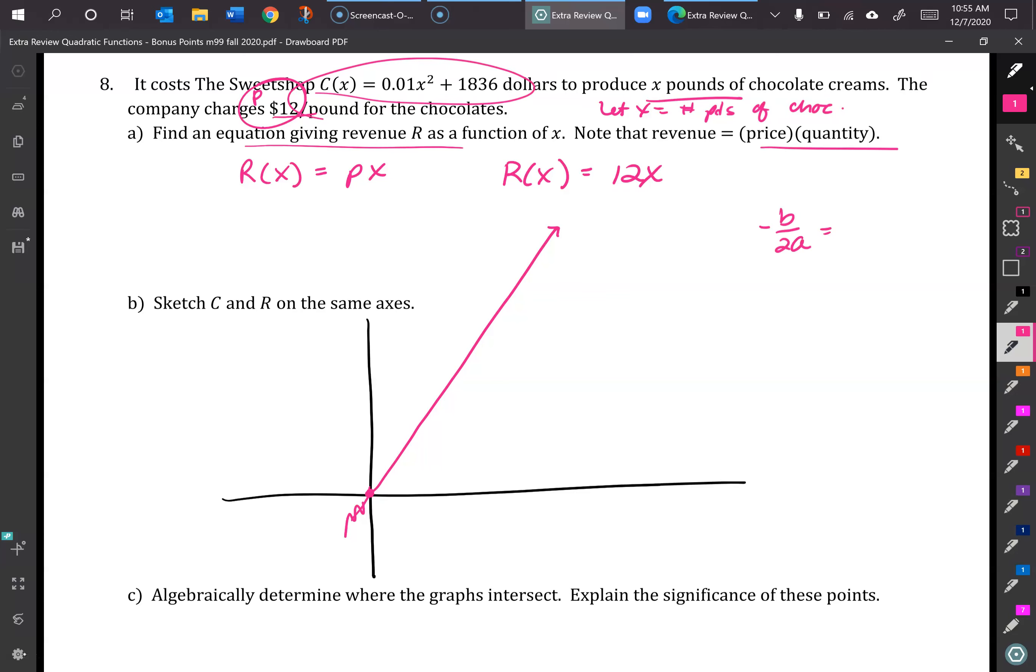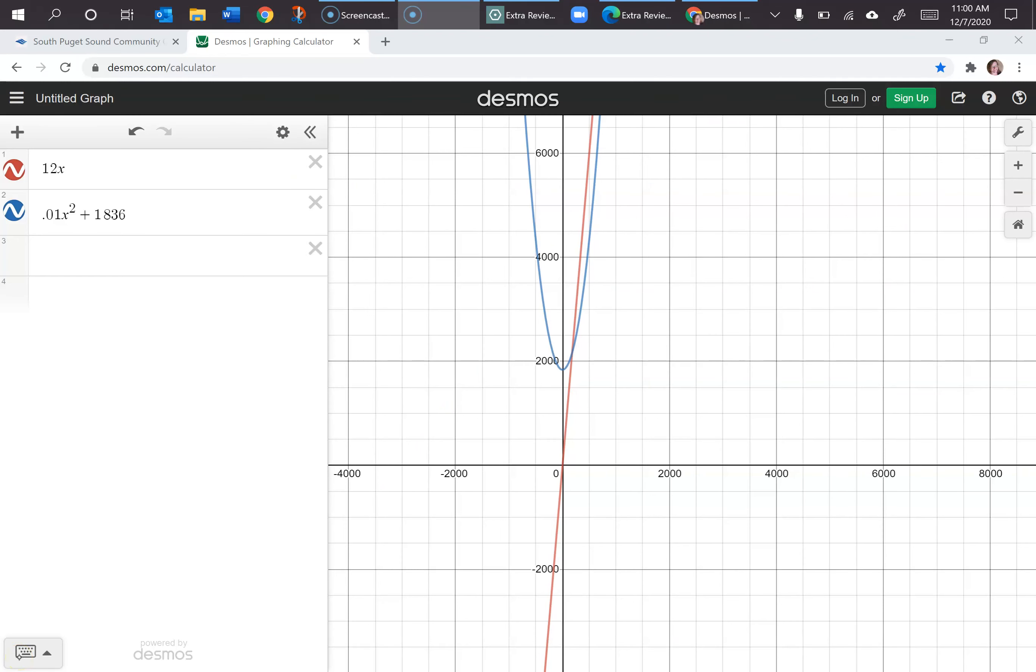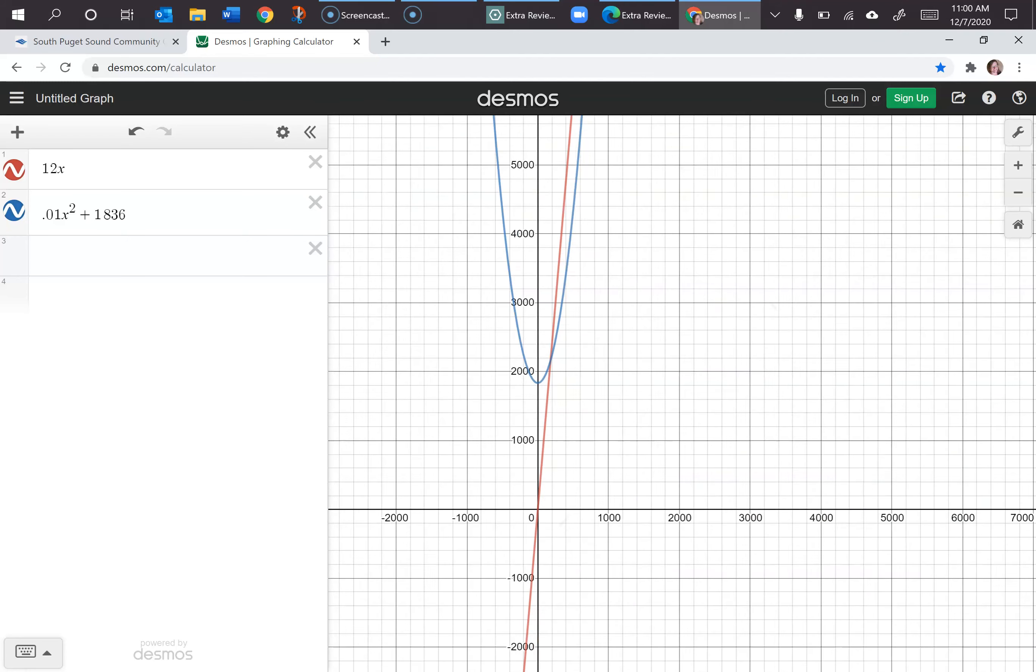So for the c function, it's already done for you. You could use Desmos for this too just to check it. But minus b, we actually don't have a b, it would be zero. So my value for that would be zero over 2a, so that's going to be zero. This one's a little tricky to graph by hand, so I just put it into Desmos. And you can see on the left I have 12x, that's the red line, and 0.01x squared plus 1836 is the curve for my quadratic. So my axis of symmetry is zero where my vertex was, and that's also my y-intercept. We talked about minus b over 2a would have been zero, and then if you put that in you actually get the same value as your y-intercept.